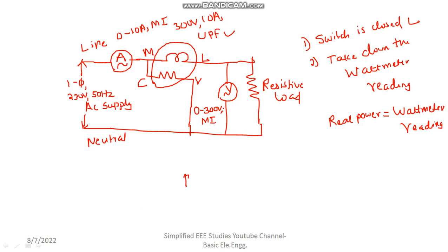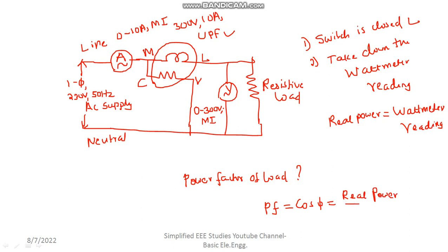How to calculate the power factor of the load? Power factor is equal to cos phi, which is the ratio of real power to the apparent power. You will get the real power from the wattmeter reading. Divide by the apparent power — multiply the ammeter reading and voltmeter reading to get the apparent power in VA. So power factor = W divided by VA. That is how you calculate the power factor of the load.